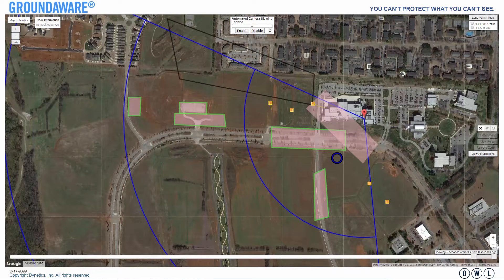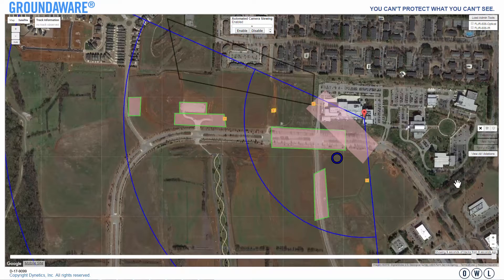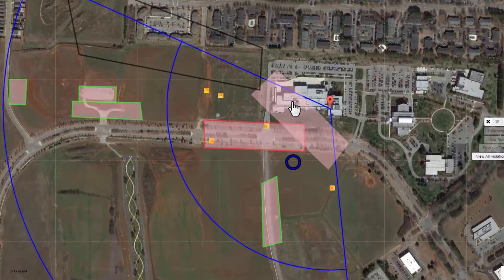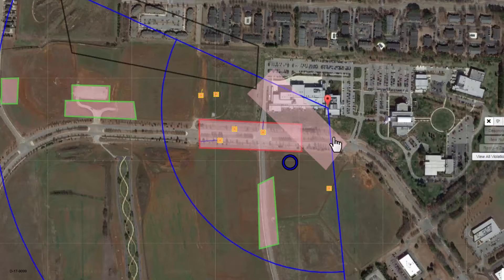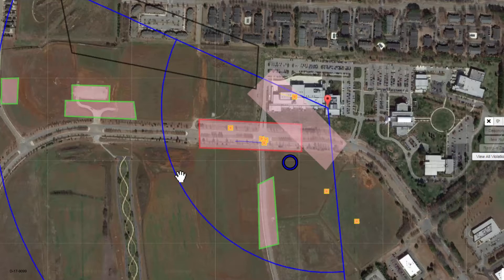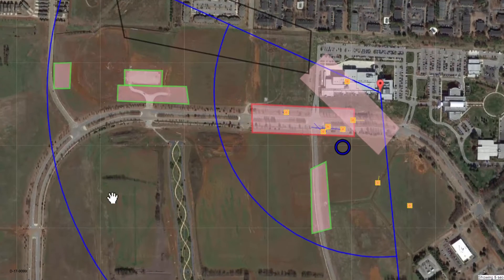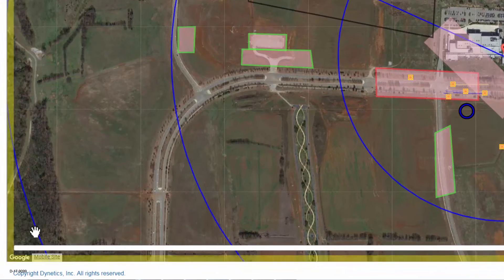Let's begin by exploring the interface and the basic controls. The interface has an intuitive Google Maps look and feel with various controls positioned around the edges of the map window. In the map window, you can see the area that is being monitored, and you can see an icon that indicates the position of the radar with a cone, indicated by these blue lines, that shows the radar's field of view. These curved lines away from the radar indicate steps of 500 meters from the center of the radar — so you have 500 meters, 1,000 meters, 1,500 meters, and so on.